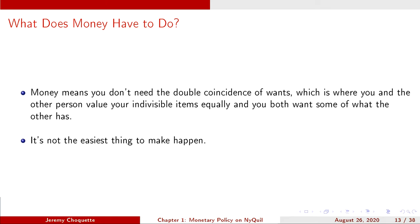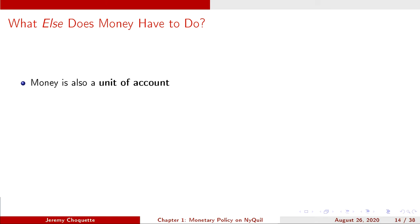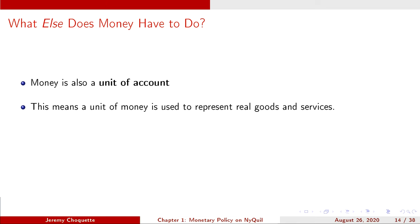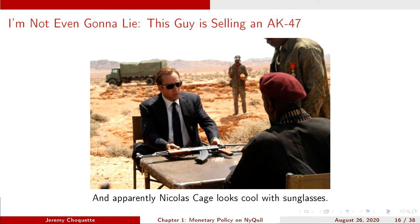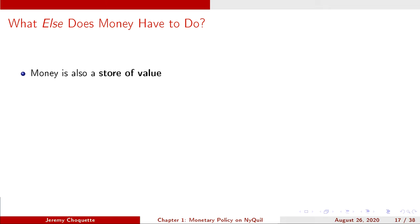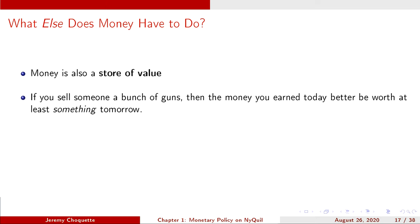Money also has to be a unit of account. That means money is used to represent real goods and services. If I think a dollar will buy me a soda, and a dollar does buy me a soda, then it meets the unit of account function — one dollar purchasing a soda means it's serving the purpose of being a unit of account. Next, money has to be a store of value. You sell someone something; the money you earn today better be worth at least something tomorrow.